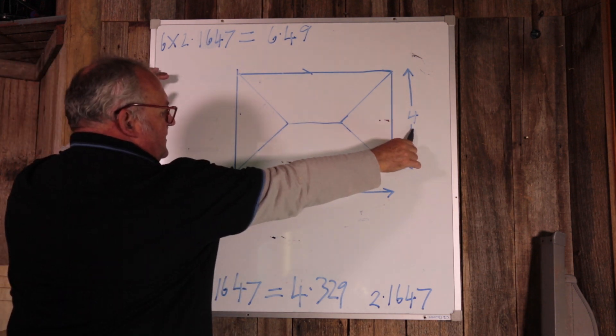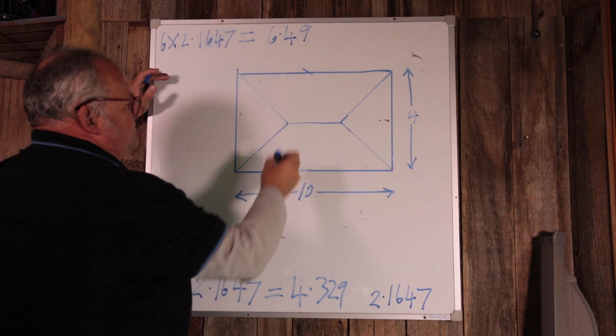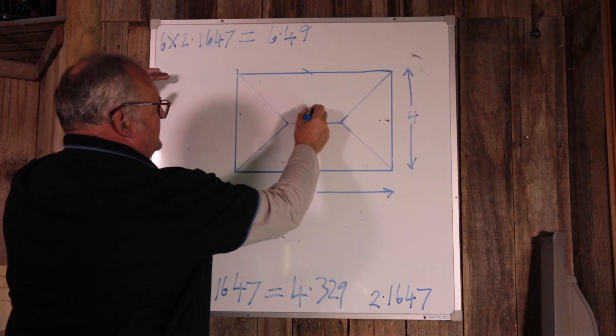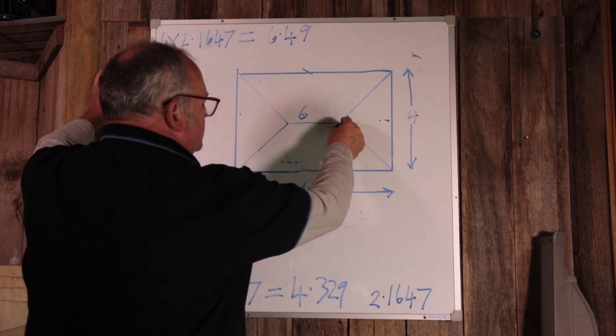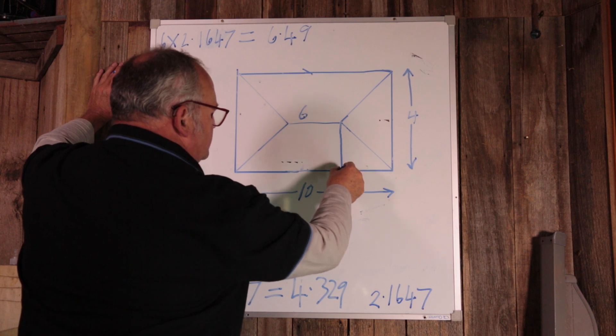So we can find the ridge length by taking this from this, which gives me a ridge length of 6 meters.